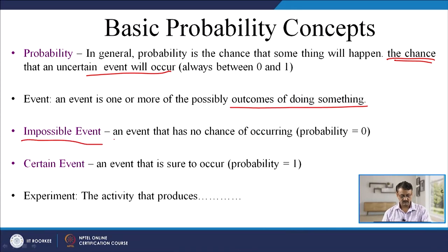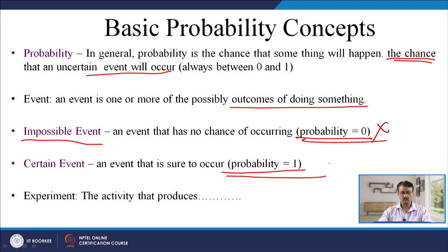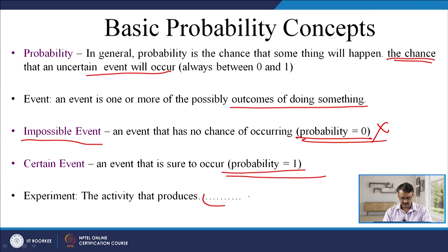Impossible events are those for which probability is 0 — for example, the sun appearing to rise from the west cannot happen, so probability is 0. Certain events are those for which probability is equal to 1 — for example, the probability of death is 1, as everyone has to die some day. An experiment is the activity that produces an outcome.